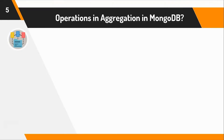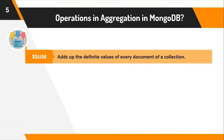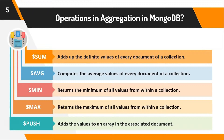Just like SQL, we have the same five main aggregation operations in MongoDB. First is sum — it adds up the values of every document in a collection. Next, average — computes the average value. Next, min — returns the minimum of all values from the collection. And max — returns the maximum of all values within the collection. Finally, there is an additional push operation. Since MongoDB is a non-relational database, we also work with arrays of elements, so you can use the push operation to add values to an array in the associated document within a collection.